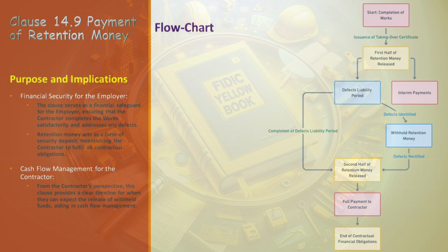Enter the blue block: the defects liability period — a time of vigilance where any lurking defects must be brought to light and rectified. Green returns to mark the completion of the defects liability period. Then the second yellow block shines — the release of the remaining retention money, a testament to the contractor's diligence and quality. Finally, we reach another pink milestone: full payment to the contractor. But what if our journey takes a detour? The blue path of defects identified leads to withholding retention money, a pause for correction, then defects rectified, steering us back on course.